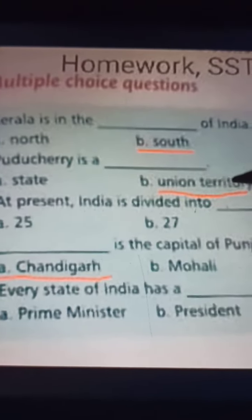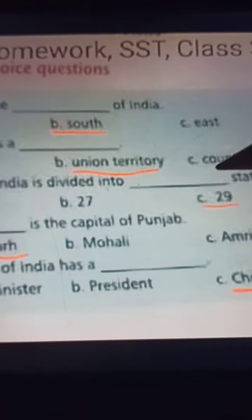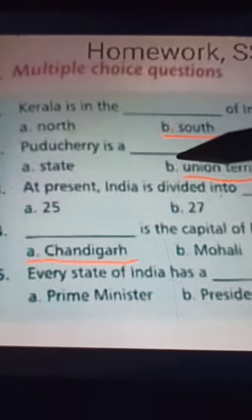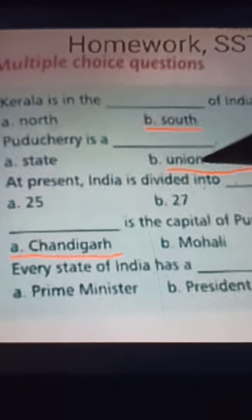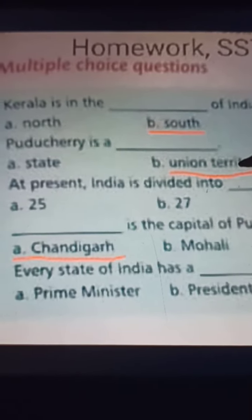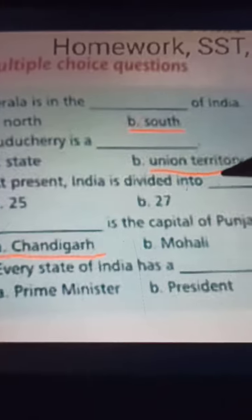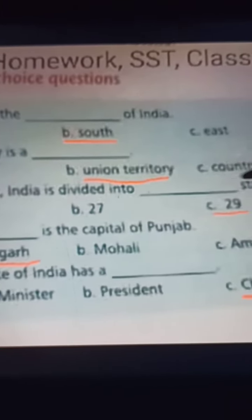Question two: Puducherry is a dash. A) State, B) Union Territory, C) Country. The answer is B — Puducherry is a Union Territory.